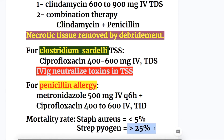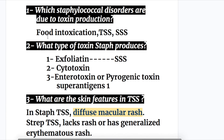Now the answers to the questions. Question one: Which Staphylococcal disorders are due to toxin production? The three disorders are food intoxication, toxic shock syndrome, and scalded skin syndrome.